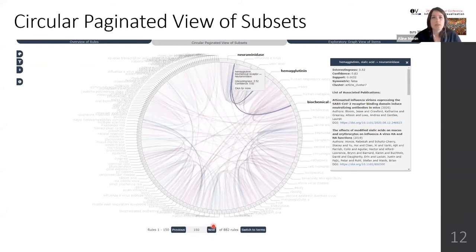The user can also click on a rule to recover a list of publications from the dataset that contains the named entities involved in that rule. We can also explore the rules involving a certain item by right-clicking on the arc representing an item and then exploring it with the exploratory graph view of items.